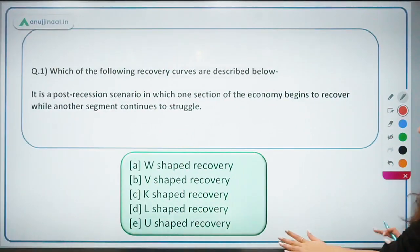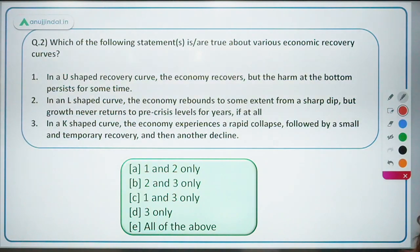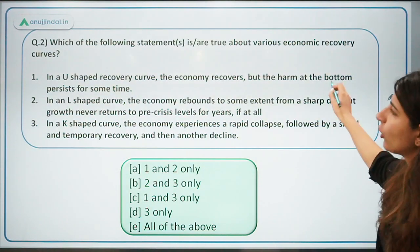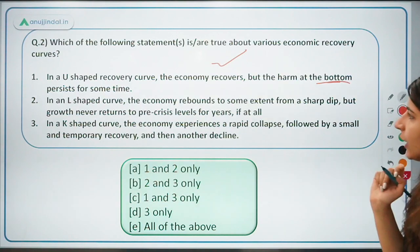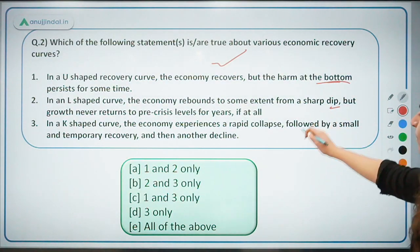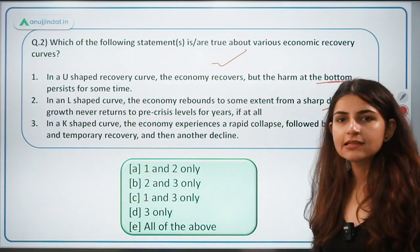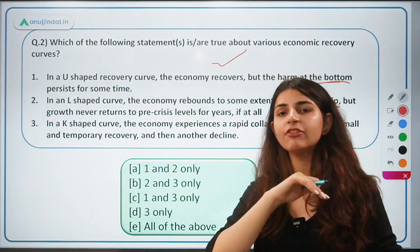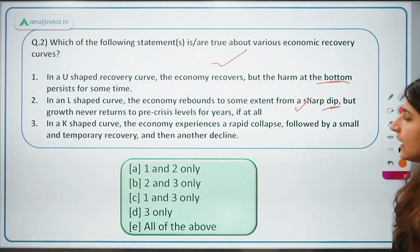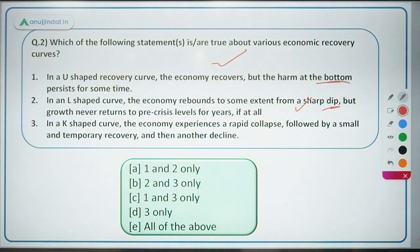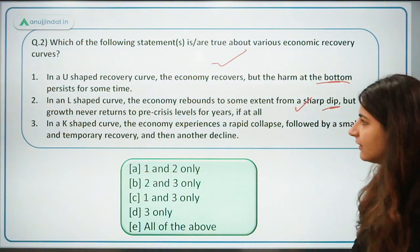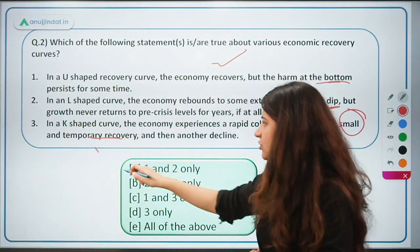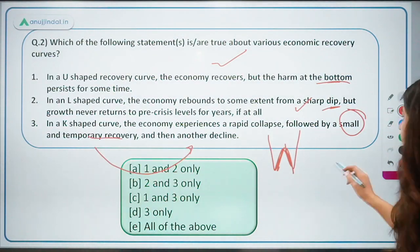Question 2: Which of the following statements is true about various economic recovery curves? Statement A: In a U-shaped recovery curve, the economy recovers but the harm at the bottom persists for some time — this is correct. Statement B: In an L-shaped curve, the economy rebounds to some extent from a sharp dip but growth never returns to pre-existing levels — this is correct for L-shaped. Statement C: In a K-shaped curve, the economy experiences a rapid collapse followed by a small and temporary recovery and then another decline — this is actually a W-shaped curve, not K-shaped.